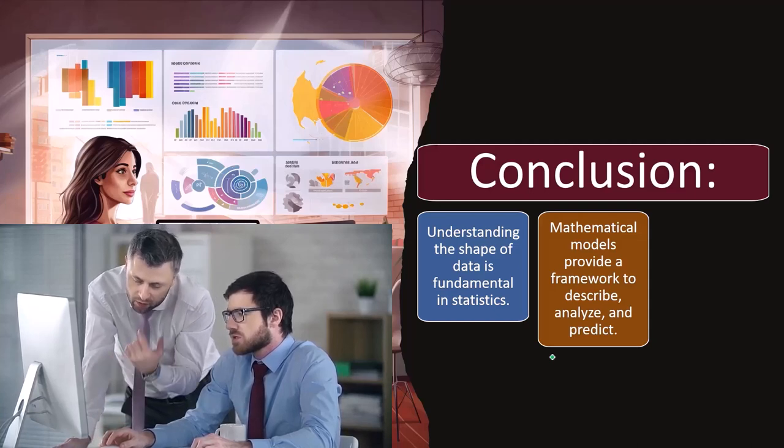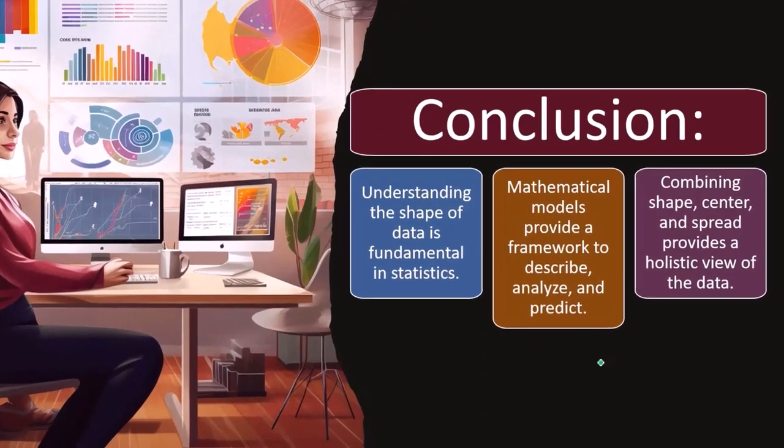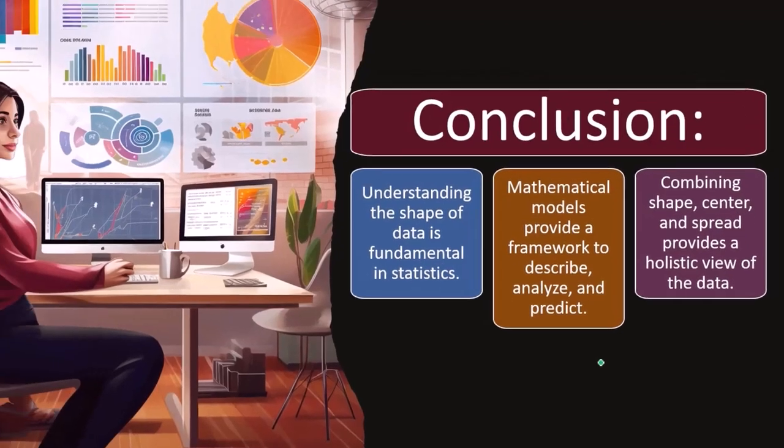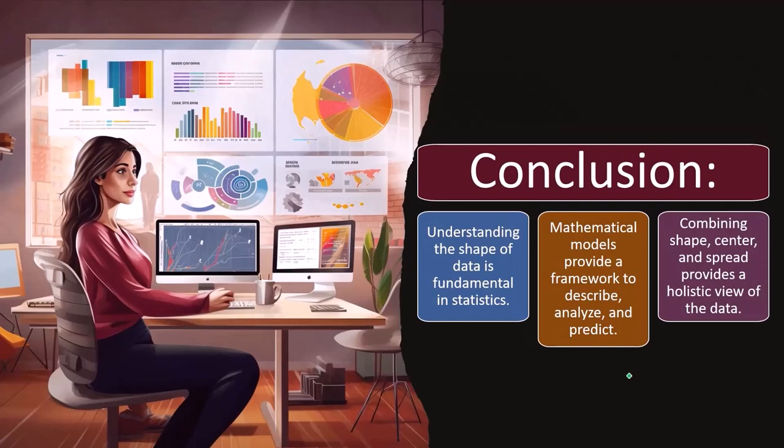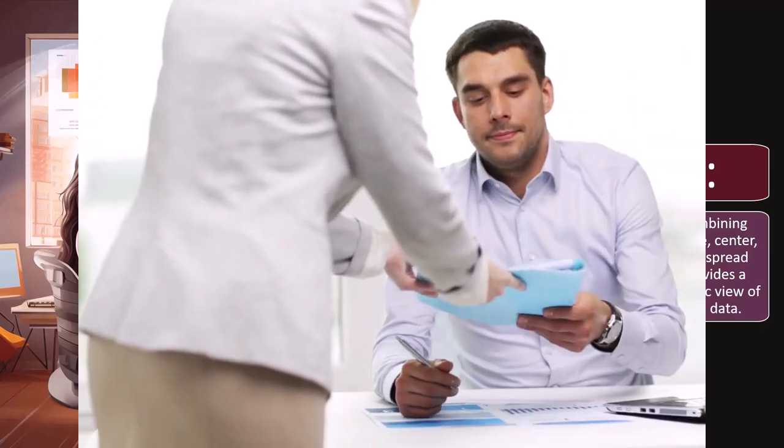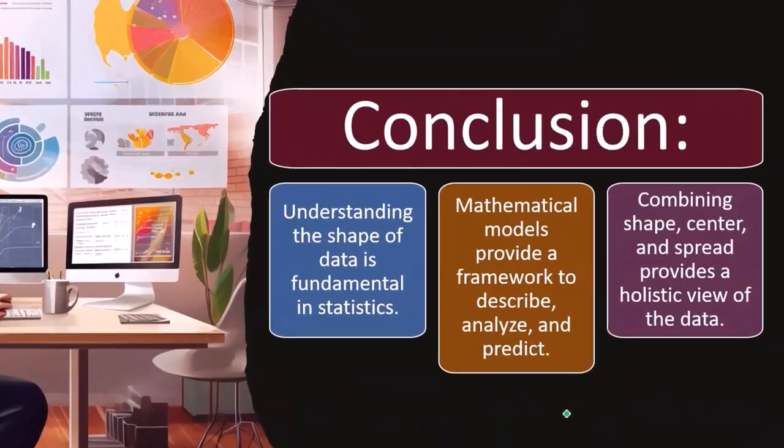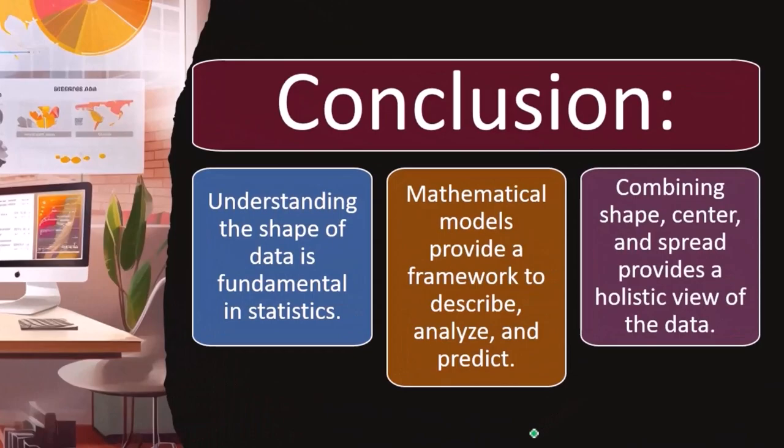Combining shape, center, and spread provides a holistic view of the data. That's the theme of the course here. We cannot represent data with just one number typically, because really to represent what is going on, we need to know more. You can summarize that in terms of the shape, the center, and the spread of the data, which we can see pictorially with a histogram and possibly be able to use more mathematical calculations to represent those numbers as well.